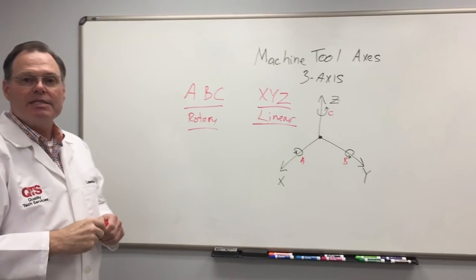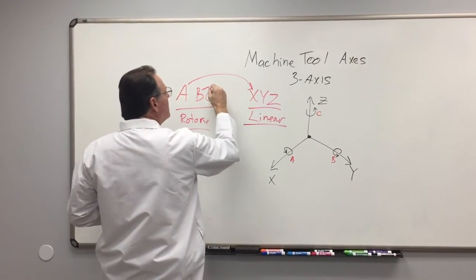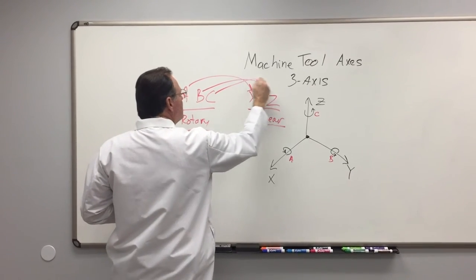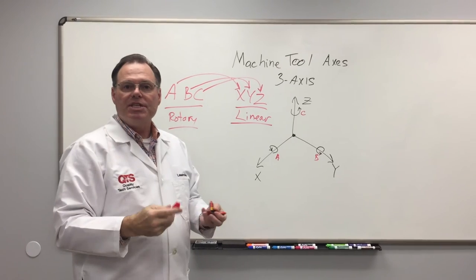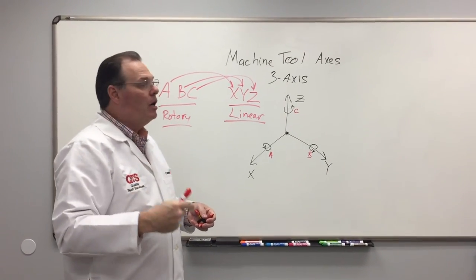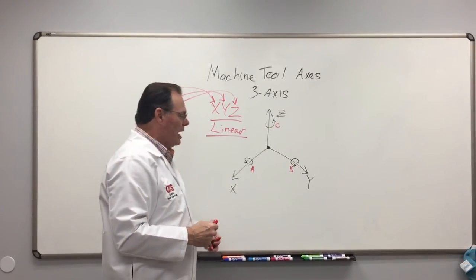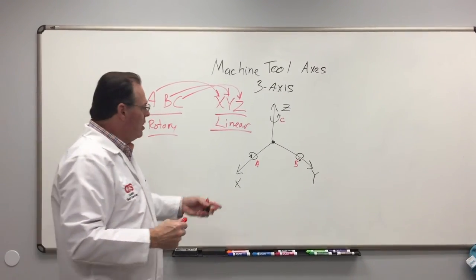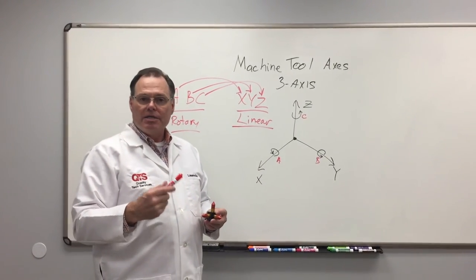So that's how we designate that. A is to x, as b is to y, and c is to z. So if I say what rotates around the z-axis? Well we know that c rotates around z. And what would rotate around the y-axis? B would rotate around the y-axis. And what would rotate around the x-axis? That would be a.